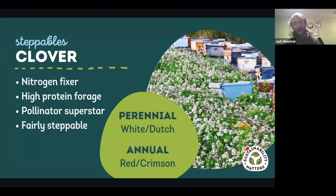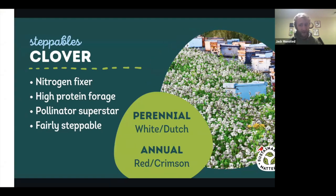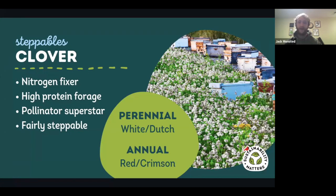Clover is something I actually kind of like. It's not a native plant, but it provides a lot of nectar for visiting pollinators — bees really like it. It holds up to stepping pretty well. It's also super easy to maintain, requiring no more than regular grass. It's also a legume, so it fixes nitrogen to the soil, which is always nice for building nutrients. If you have a lawn and you're not super picky about herbicide, you might get clover popping up in there already.